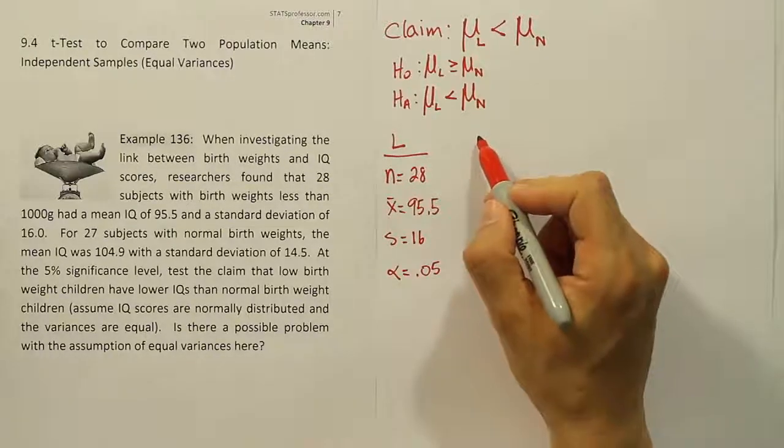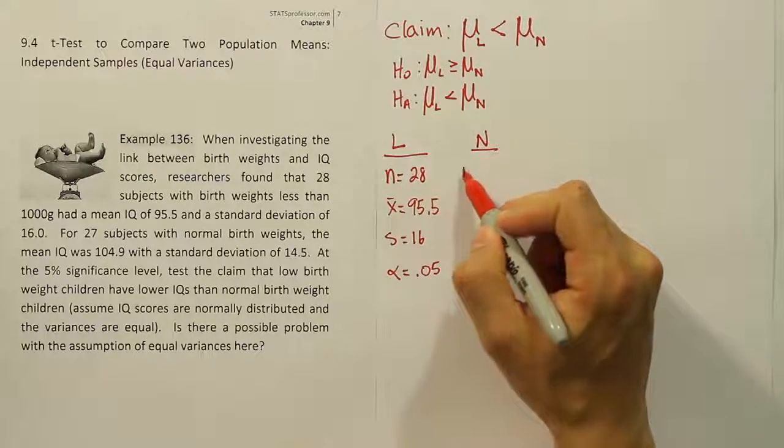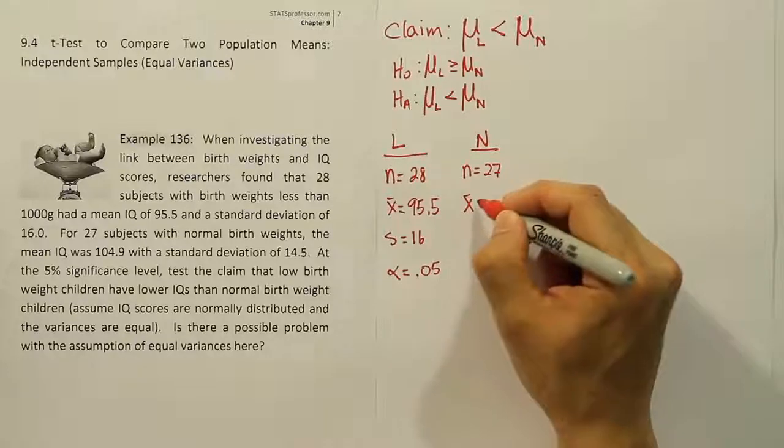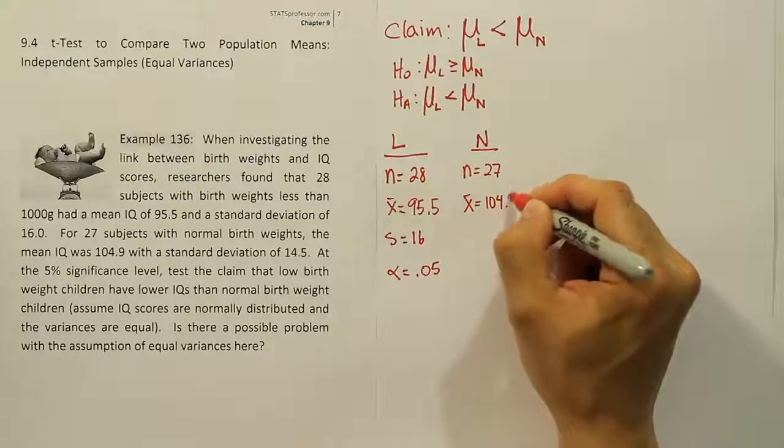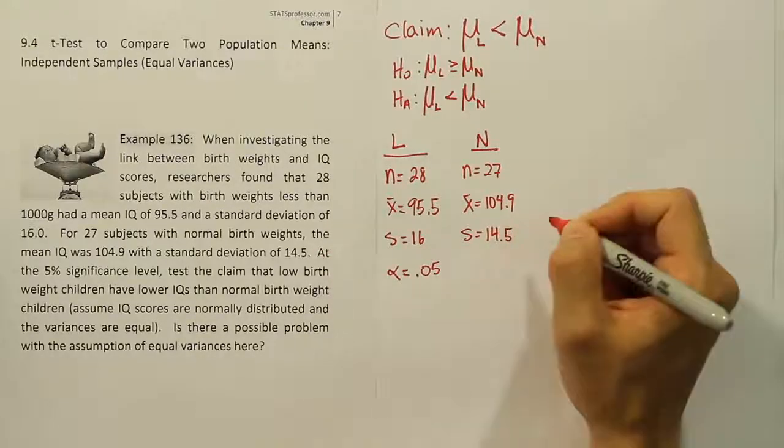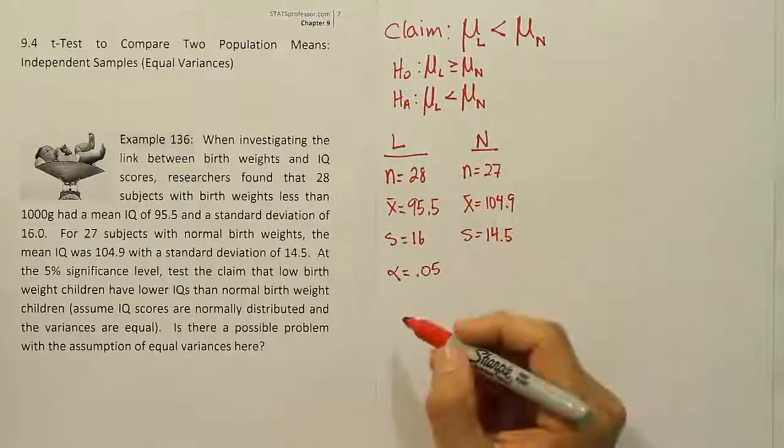Going on here to the normal birth weight side, the N for that group was 27. The sample mean for that group was 104.9. And the standard deviation is 14.5. So we have low and normal.